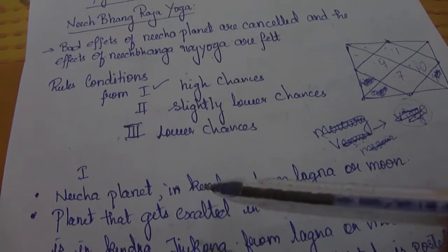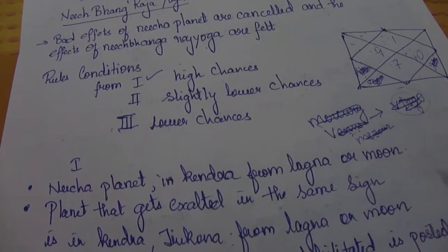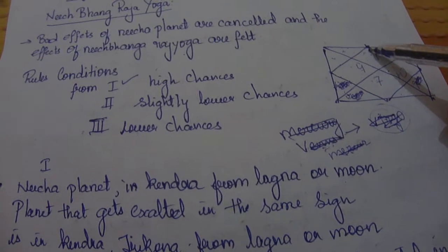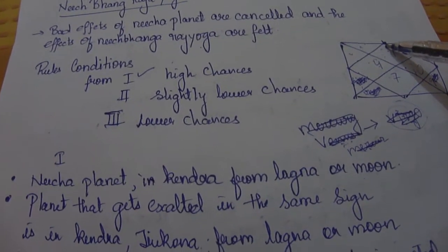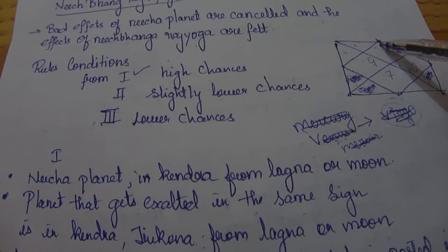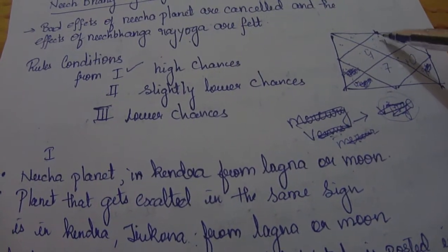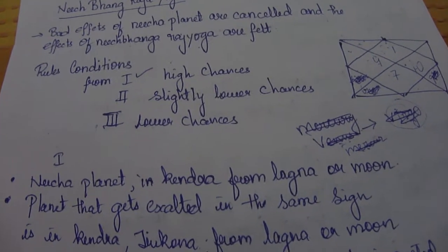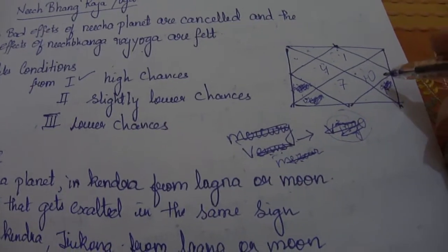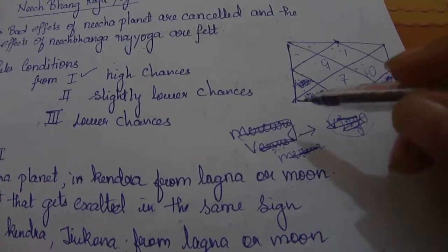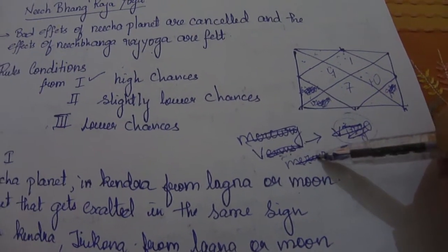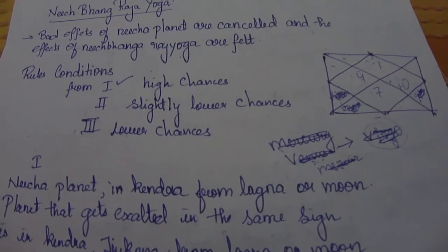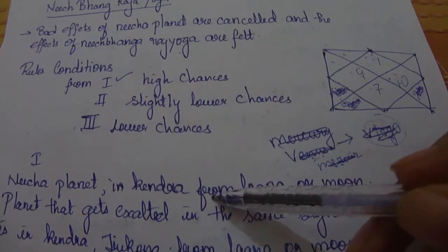The first rule is that the Neecha planet is in Kendra from Lagna or Moon. Lagna is nothing but the first house. Kendra is house number 1, 4, 7, or 10. So if Venus, debilitated in Virgo, is present in the 10th, 7th, 4th, or 1st house from Lagna or Moon, then its weakness would get cancelled because it is in a Kendra house.